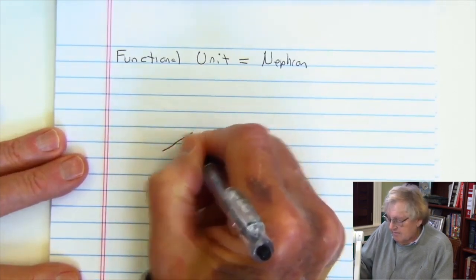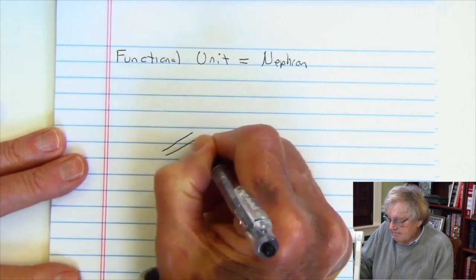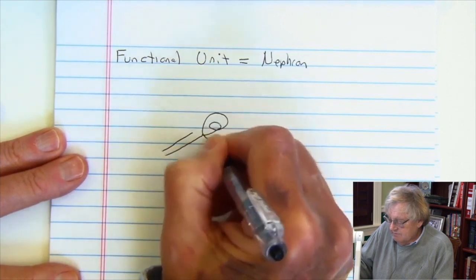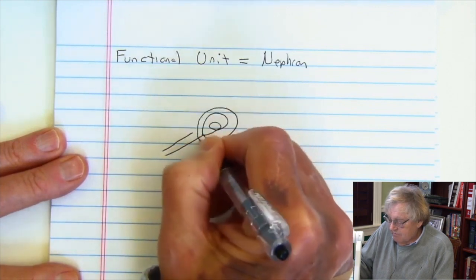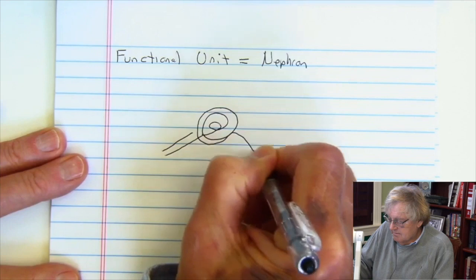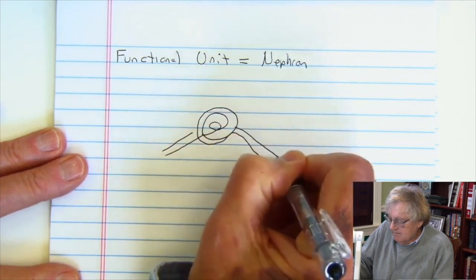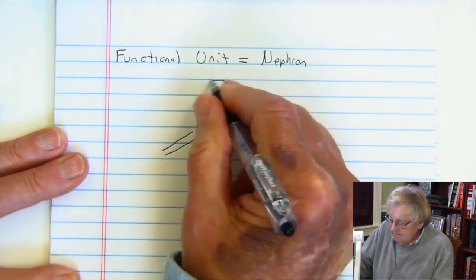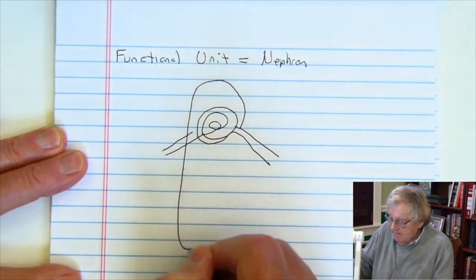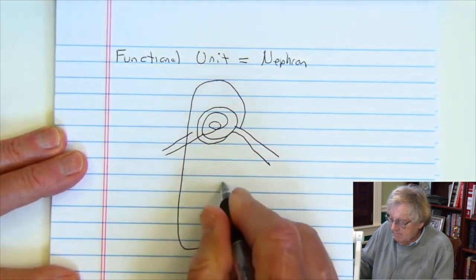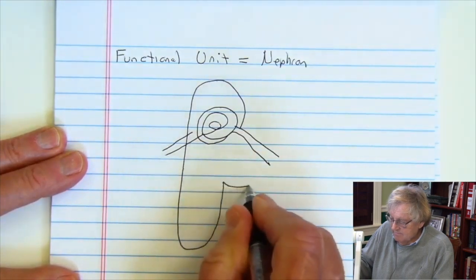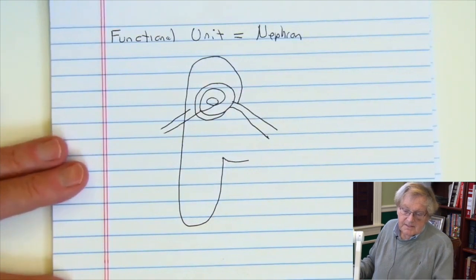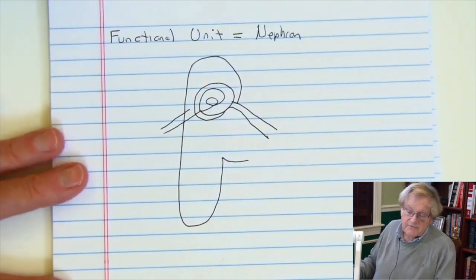There are literally millions of nephrons inside of each kidney — that's why we've got such residual capacity. A nephron is a very unique-looking structure: you come in, go into a circle, come out, and then surround that with a tubule system coming up and down and around.